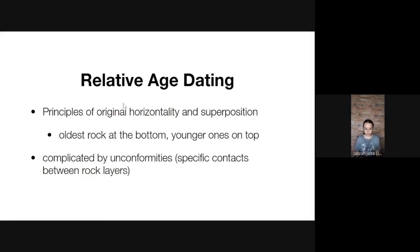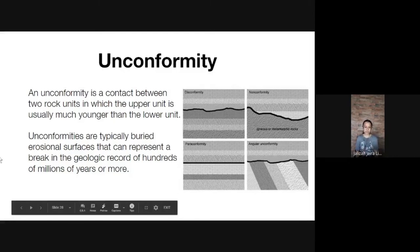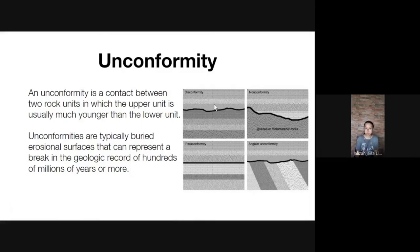Relative age dating is primarily governed by the Principle of Original Horizontality and Superposition — older rocks at the bottom, younger rocks at the top. However, these are often complicated by unconformities, which are erosion events that can disrupt the layering sequence. An unconformity is a contact between two rock units — shown here as deep black lines — indicating the upper unit is much younger than the lower unit, with a layer of rock in between that was lost to erosion.